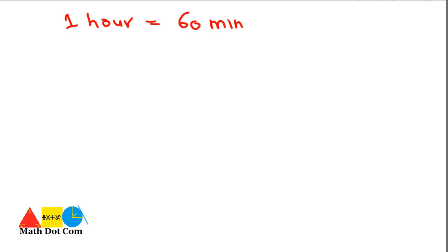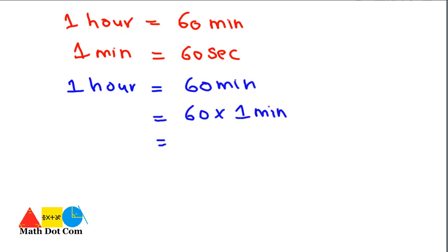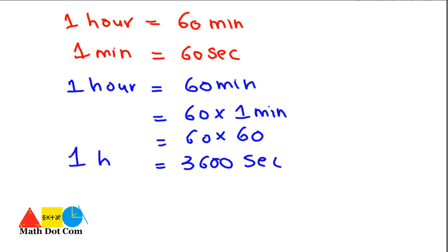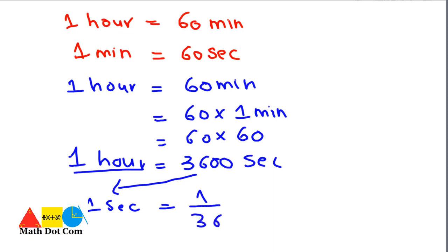One hour equals 60 minutes, and one minute equals 60 seconds. So to convert one hour into seconds: one hour equals 60 minutes, and substituting 60 seconds for one minute, we get 3600 seconds. So one hour equals 3600 seconds. If we ask how many hours are in one second, we divide and get one second equals 1/3600 hours.